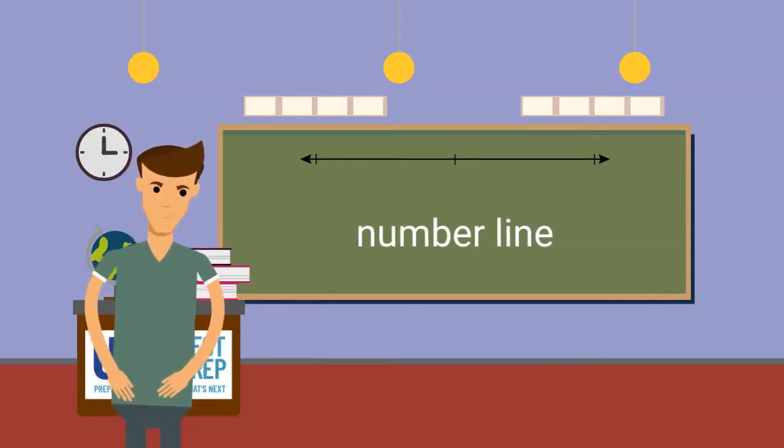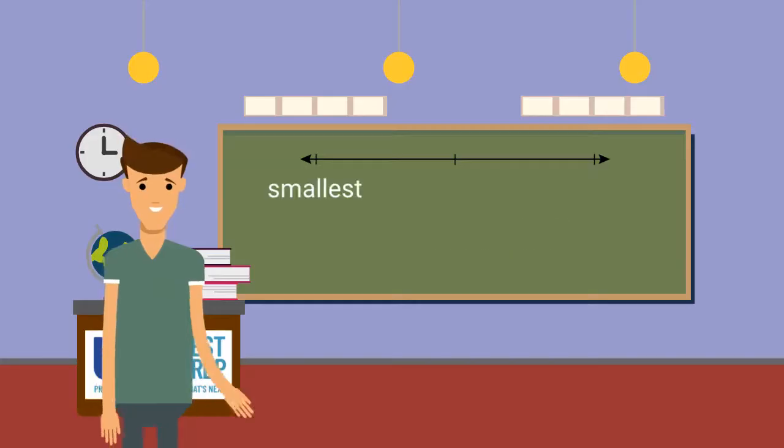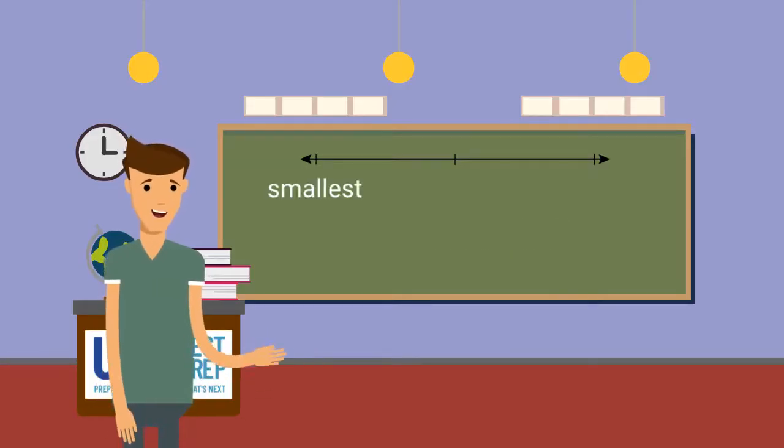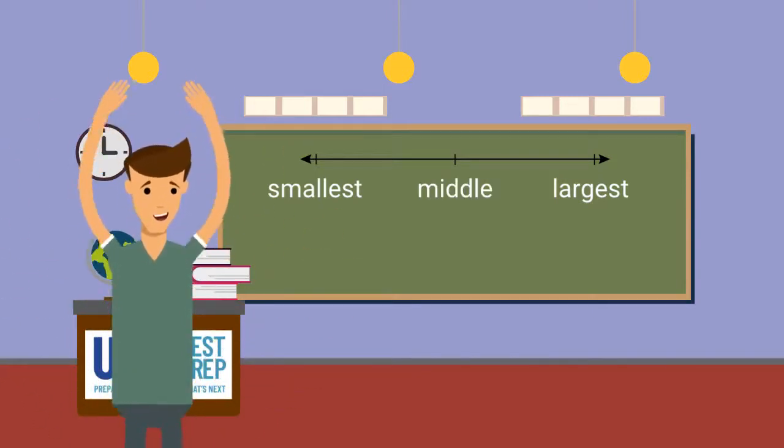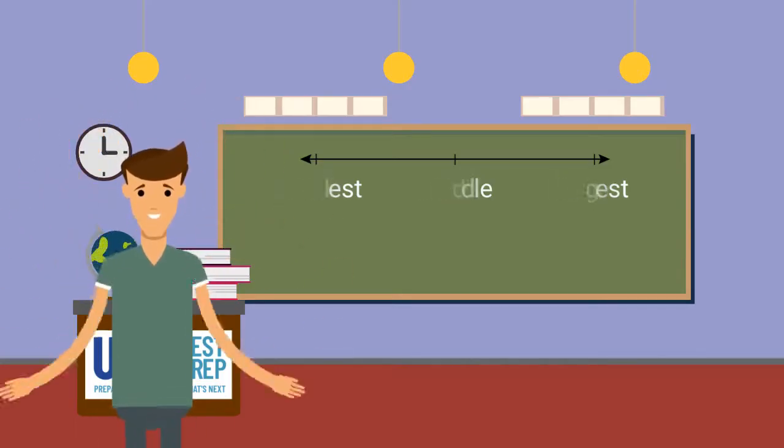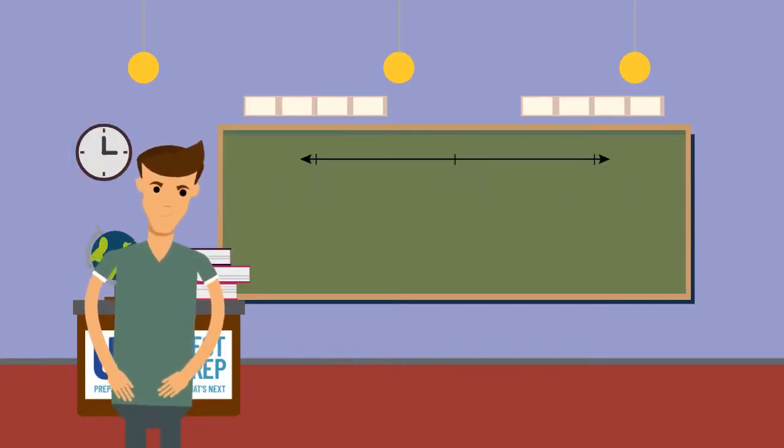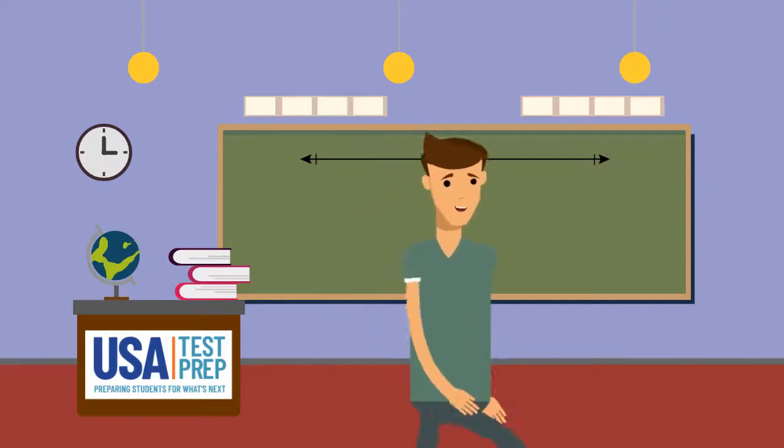A number line is a never-ending line that helps organize numbers in numerical order. The number on the left is the smallest number. The number on the right is the largest number. The number in the very middle is halfway between the lowest and the highest numbers. Let's go to the chalkboard to learn more about number lines and rounding.